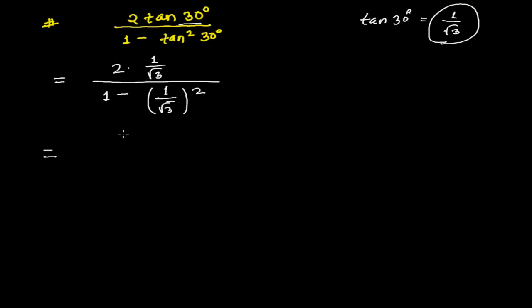And in the next step, what I'm going to get: I'm going to get 2 over √3, and then whole divided by 1 minus 1 by 3. Because the square of √3, actually √3 times √3 equals 3. So this is 2 by √3.